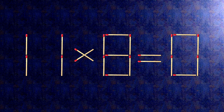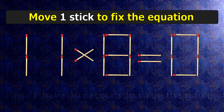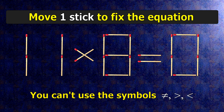We have the equality 11 times 8 equals 0. Our equality is wrong. We need to move one match to make our equality correct.